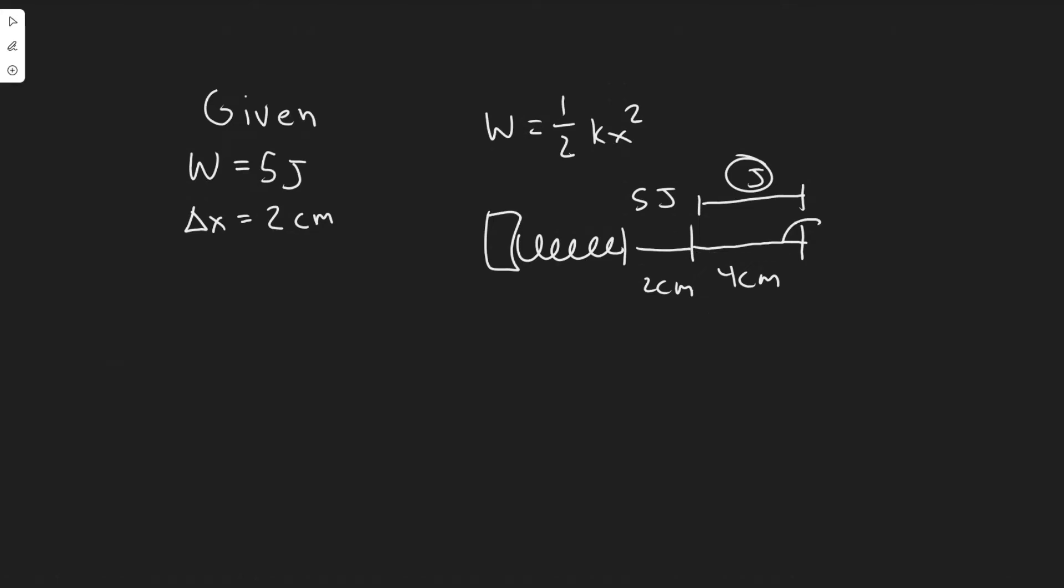As I said, first we've got to find how much is it going to take to stretch it six. So w equals one half kx squared. We know x is just going to be six centimeters because we're finding it here, but we don't know k.